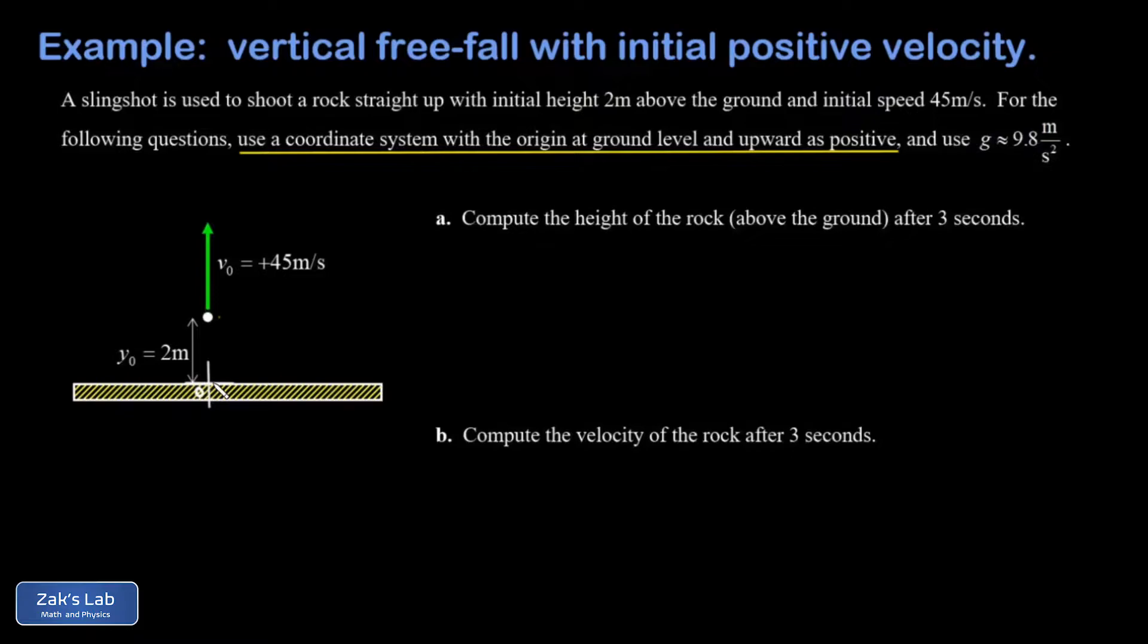This means the initial height of the rock is two meters, initial velocity is positive 45 meters per second, the acceleration is downward so that will count as negative 9.8.